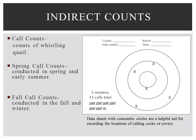Call counts are simply counts of whistling quail. There are two types of call counts for bobwhites: spring for mating and fall for covey. Scaled quail do not have a fall covey call, so only spring call counts apply to them. Spring call counts are conducted in spring and early summer. Only the bobwhite whistle and scaled quail walk are recorded for spring call counts. Peak calling is typically observed in May and early June in Texas, so surveys should be conducted during this time period.